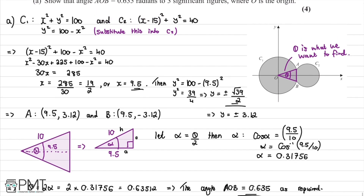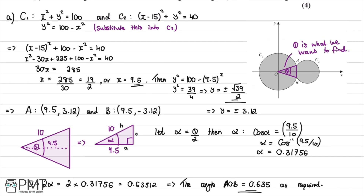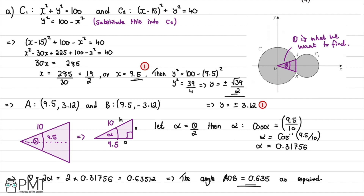This question was worth four marks. The first mark was for the x-coordinate value, the second for the y-coordinate, the third for the trigonometry using the right-angle triangle and finding alpha equals 0.31756, and the final mark for doubling and concluding with the required answer.